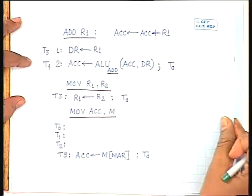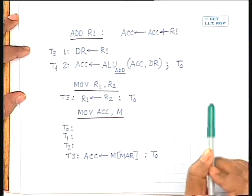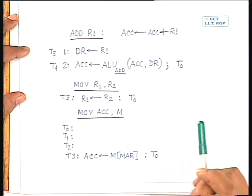Till last class, we considered only the ADD instruction. For execution of any instruction, common operations like opcode fetch occur during machine states T0, T1, and T2 — those are common micro-operations for all instructions. From T3 onwards, the micro-operations differ for different instructions.